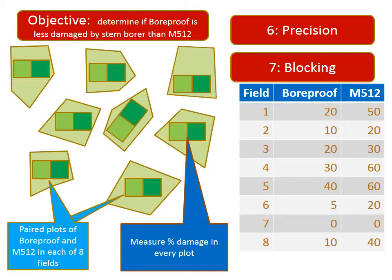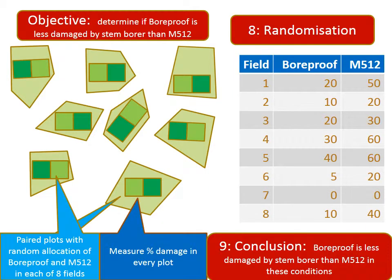But there is a flaw. Bore-proof is on the left-hand plot in every field — maybe these plots would always have less damage. Perhaps the wind tends to blow from the right and bring pests to the M512 plots first. That might be far-fetched, but with this design you cannot be sure that there is no systematic difference between the two plots in each field, other than that due to variety.